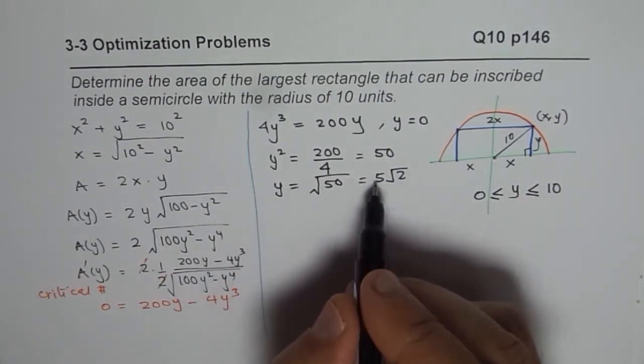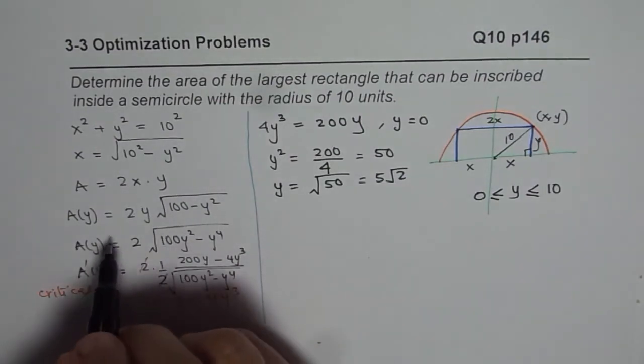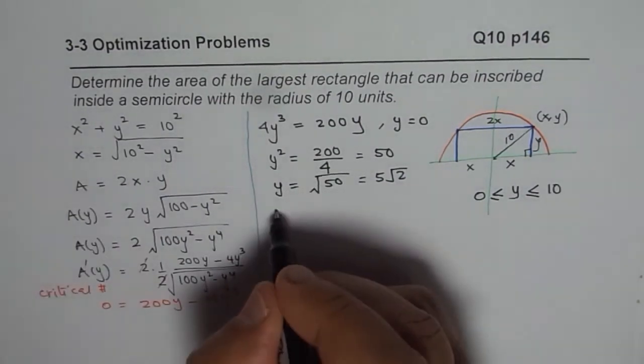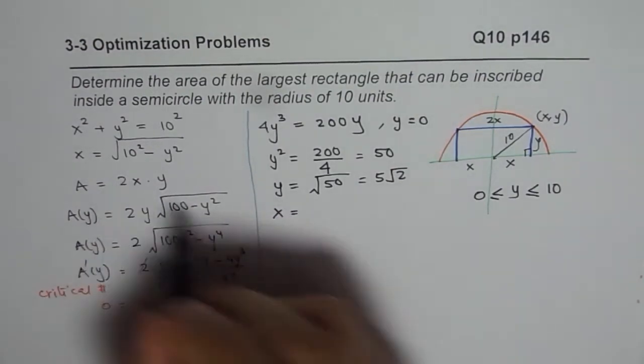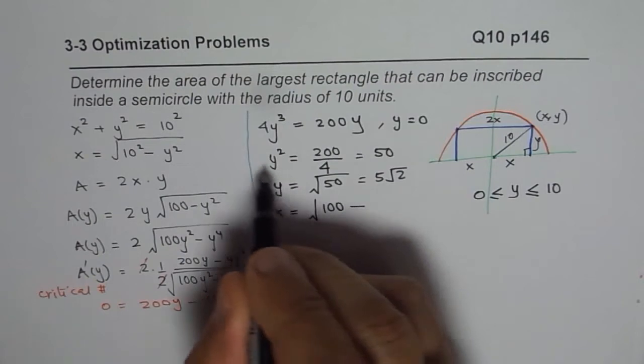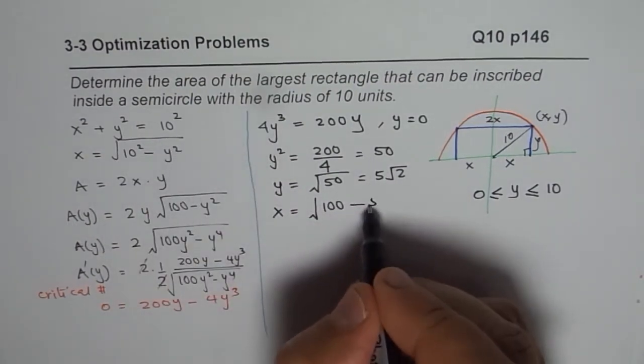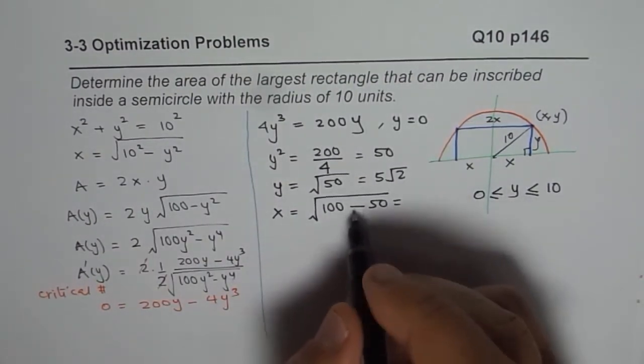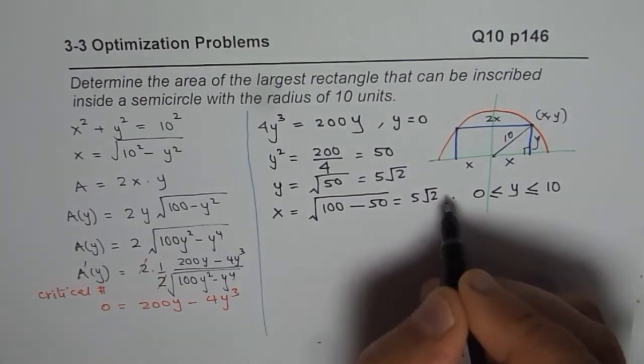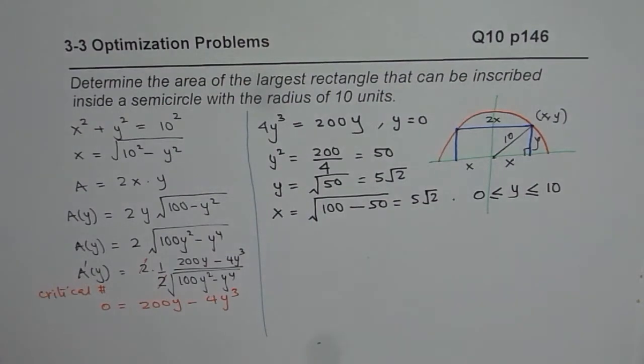If y is 5 square root 2, then what is going to be x? So from this particular expression we can find what x is. So x will be equal to square root of 10 squared is 100 minus y squared, which is 50. So x is also equal to 5 square root 2. So both are 5 square root 2.